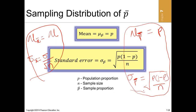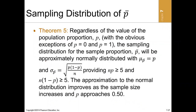Theory five states that regardless of the value of population proportion P — with the obvious exception of P equals 0 and P equals 1 — the sampling distribution of the sample proportion will be approximately normally distributed with the mean of the sample proportion equal to the population proportion, and the standard error of the sample proportion equal to the square root of P(1-P)/n, when we have a large sample size.